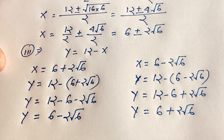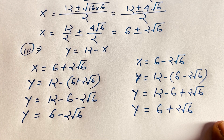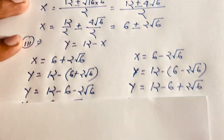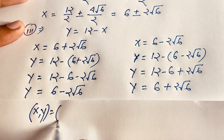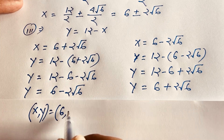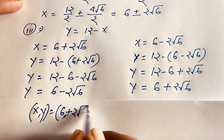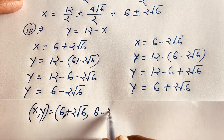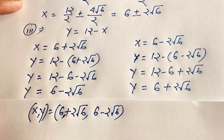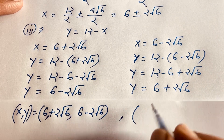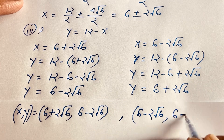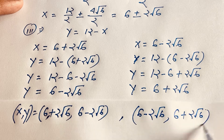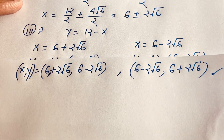So we find two answers. Our first answer: when x equals 6 plus 2 root 6, then y equals 6 minus 2 root 6. And when x equals 6 minus 2 root 6, then y equals 6 plus 2 root 6. This is our final answer for this math olympiad question.